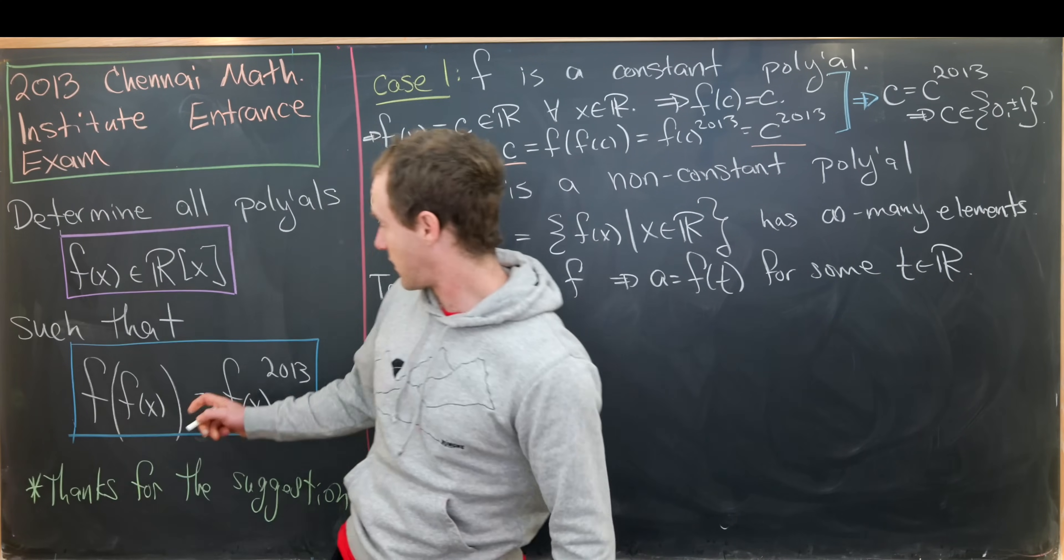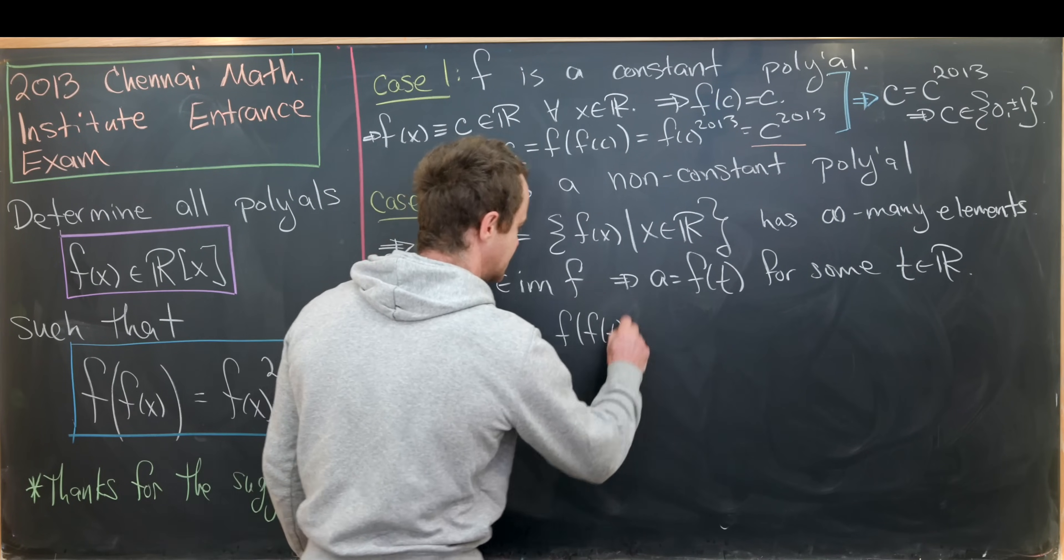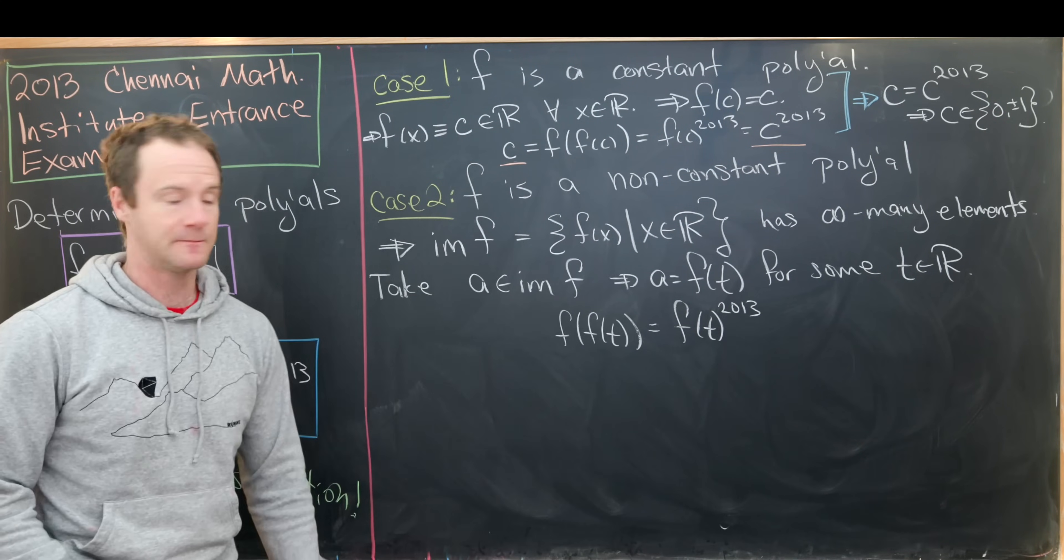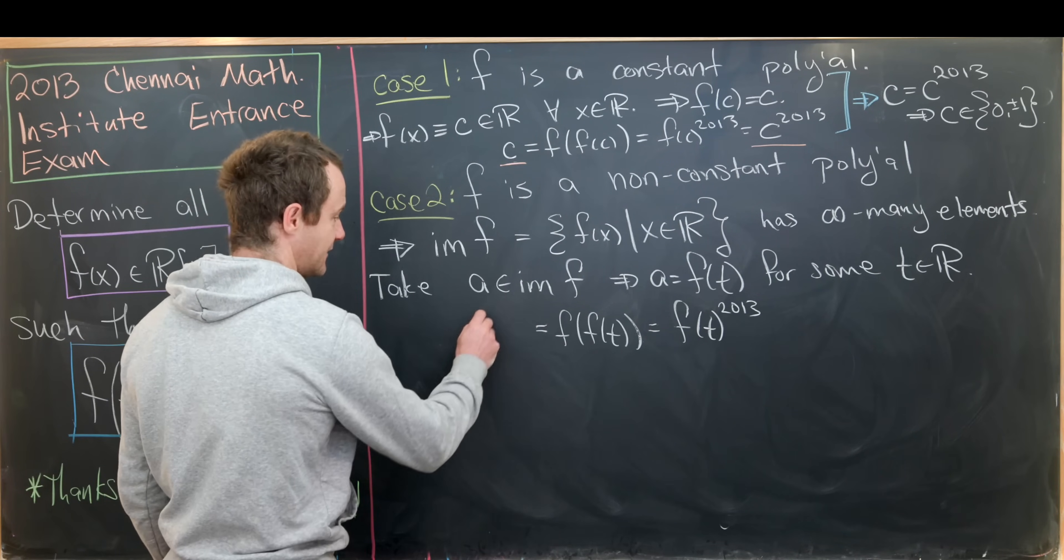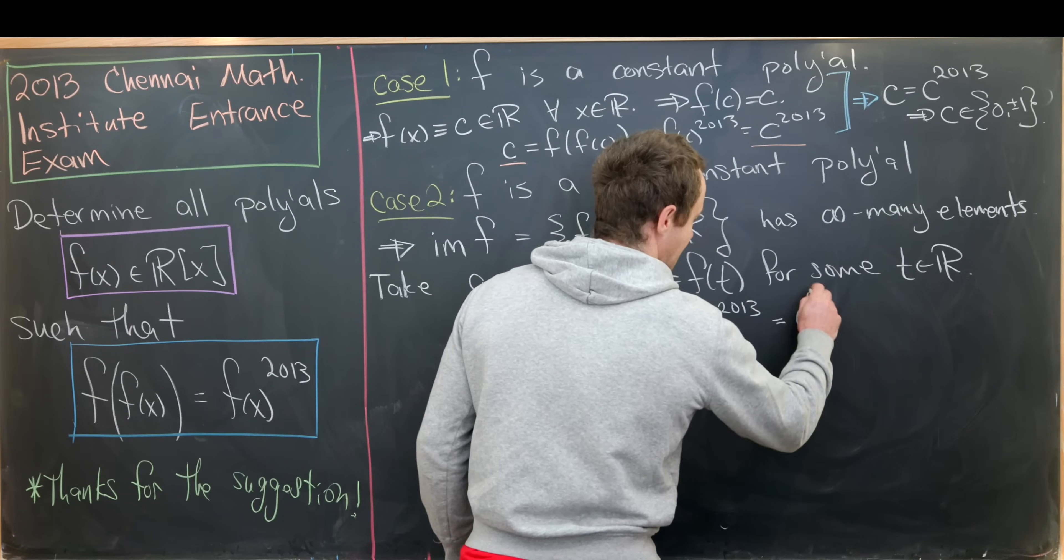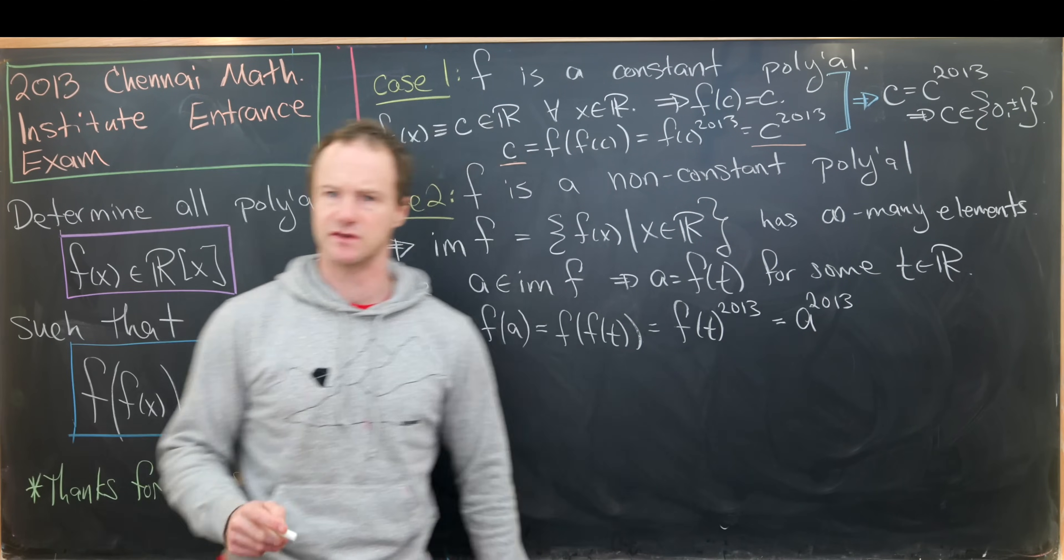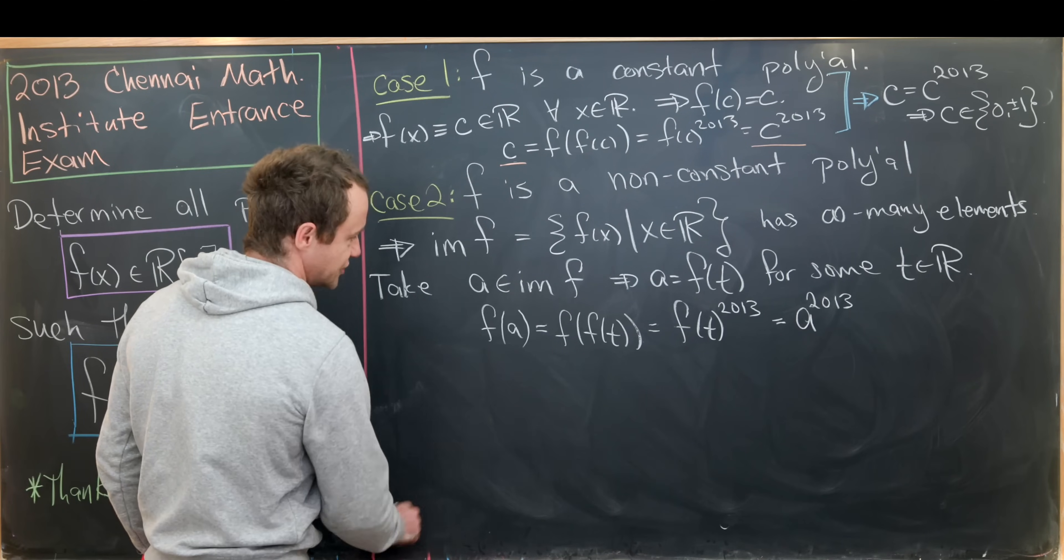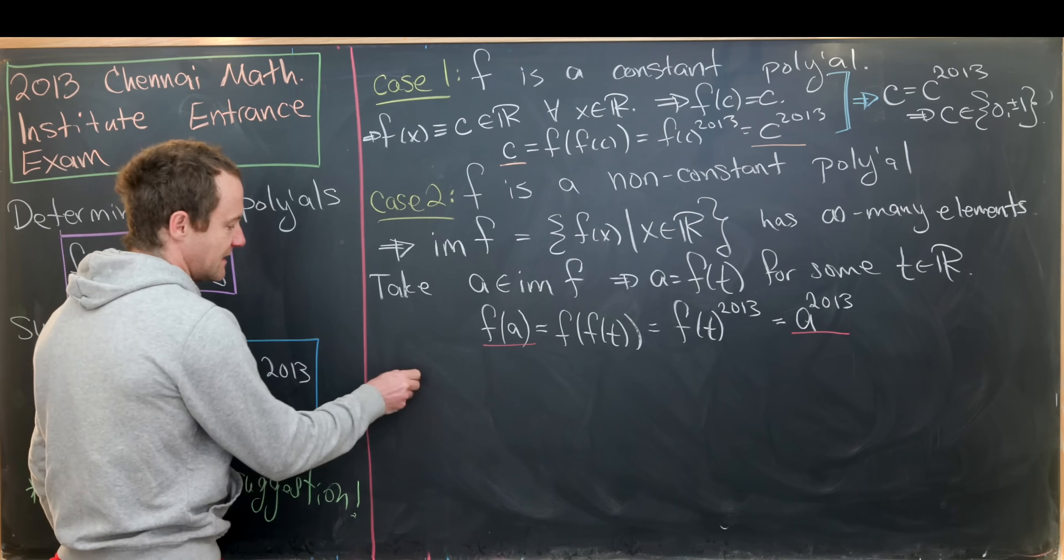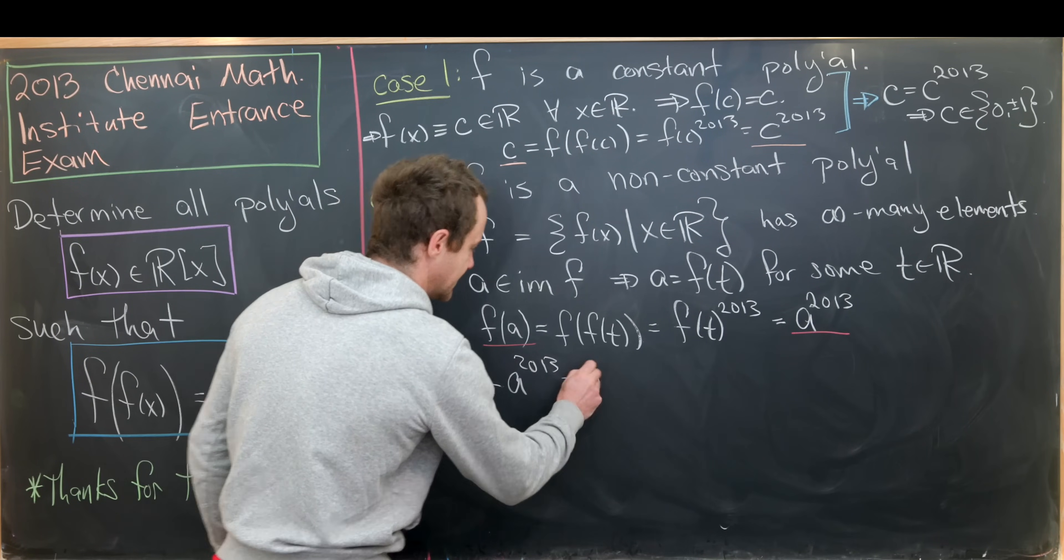Now let's start applying this functional equation. Let's notice that f evaluated at f of t is the same thing as f of t to the 2013. But now this f evaluated at f of t is exactly f evaluated at a from the line right above, and then this guy over here is a to the 2013 from again this functional equation. But let's look at this equation that we formed. We have f of a equals a to the 2013. That tells us that f of a minus a to the 2013 is equal to zero.